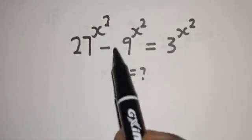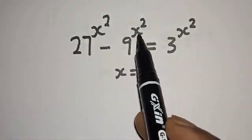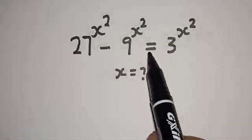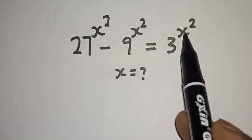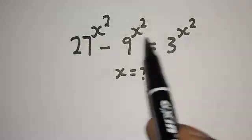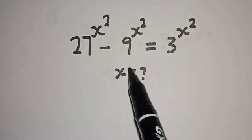27 raised to power x squared minus 9 raised to power x squared is equal to 3 raised to power x squared. What is the value of x?